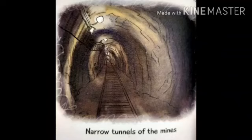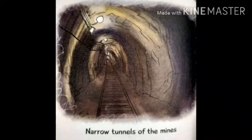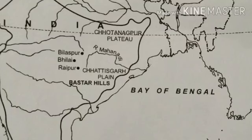Panna in Madhya Pradesh is famous for diamond mines. A mine is a deep hole under the ground where we get metals and minerals. Diamond is the hardest natural substance on earth, and a diamond is used to cut another diamond.